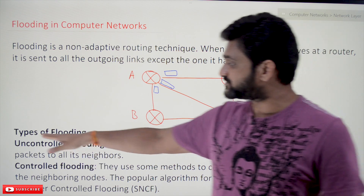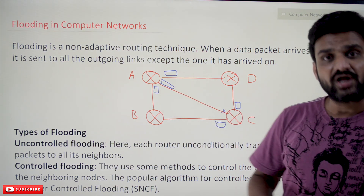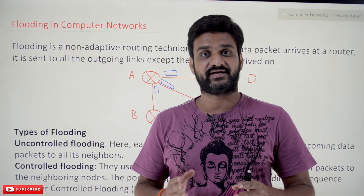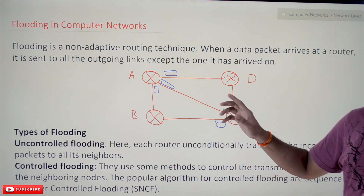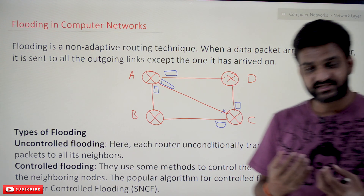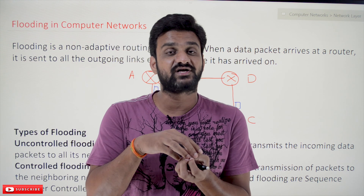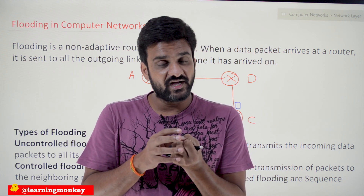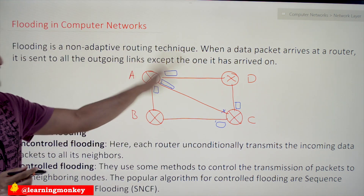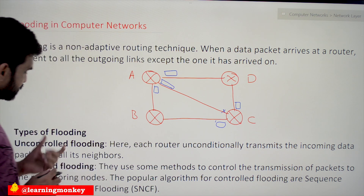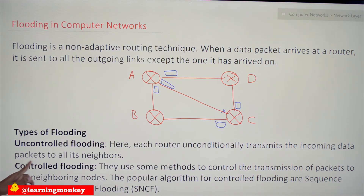To control flooding, there are two different types. The first is uncontrolled flooding, where without any control all the packets are transmitted through all the interfaces to which the routers are directly connected. When a packet is transmitted this way, whenever it is received the receiver checks the destination IP address. If the destination IP address maps to that network, the packet is accepted and sent to the destination host. Each router unconditionally transmits incoming data packets to all its neighbors.